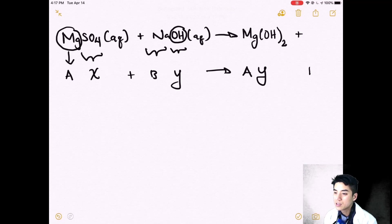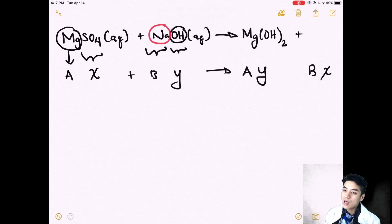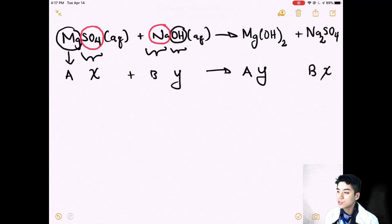We're going to add this to compound BX. Now we're going to circle B and circle X. We're going to form, it looks like, sodium sulfate. Remember to cross the charge, Na2SO4. Make sure you balance your charge or balance your equation.